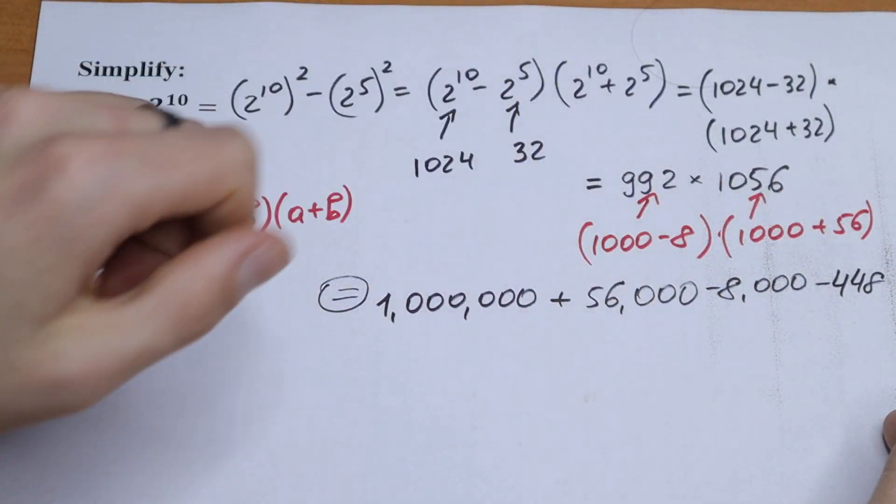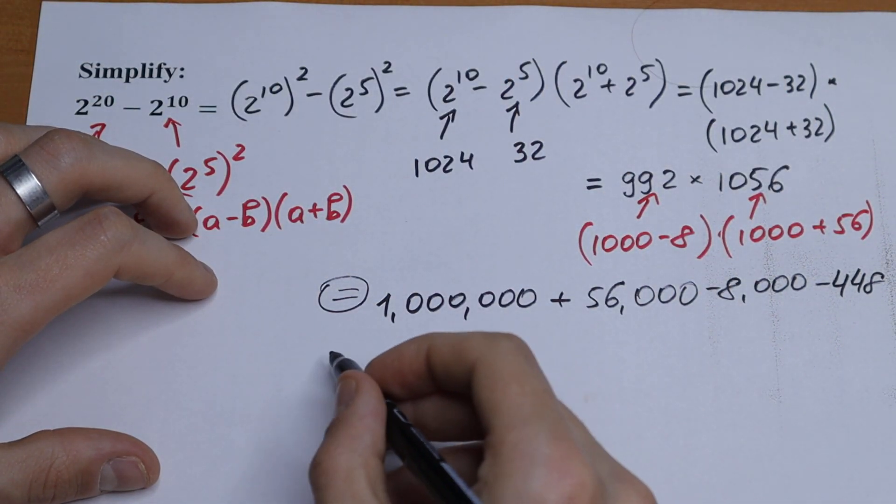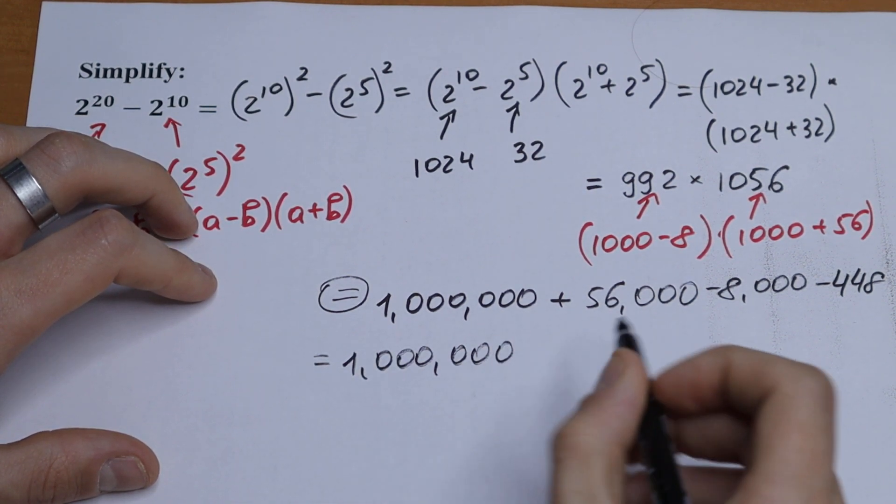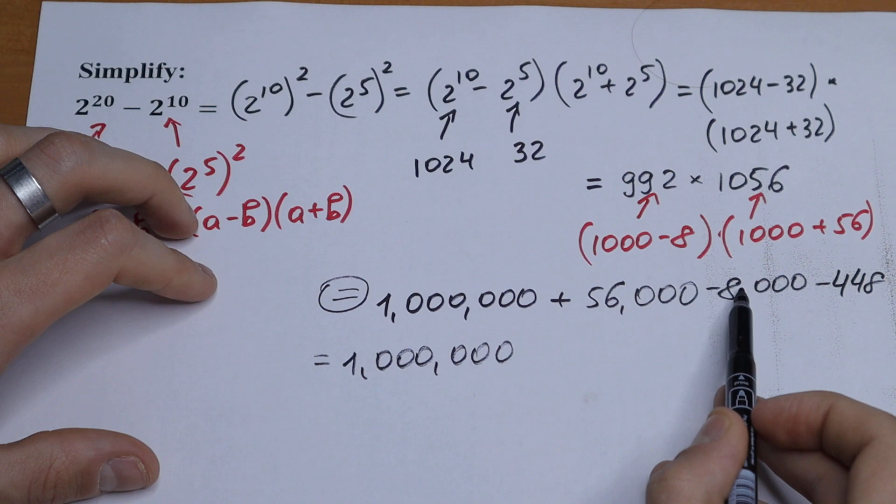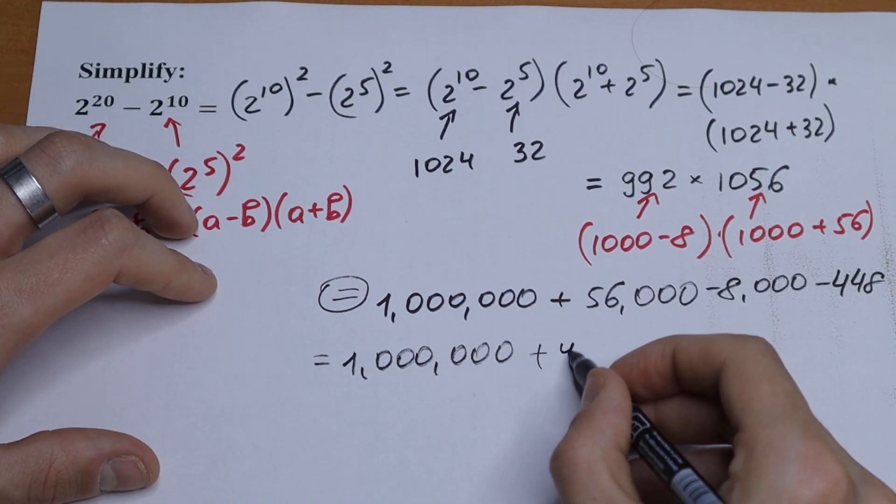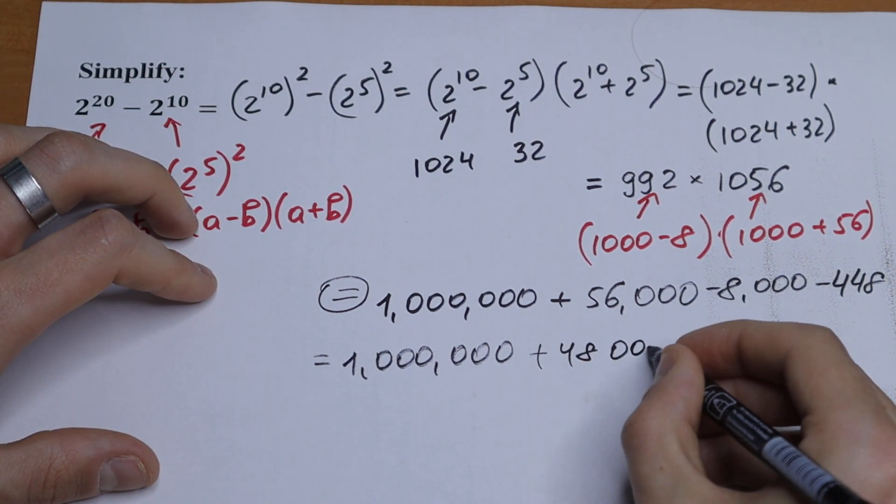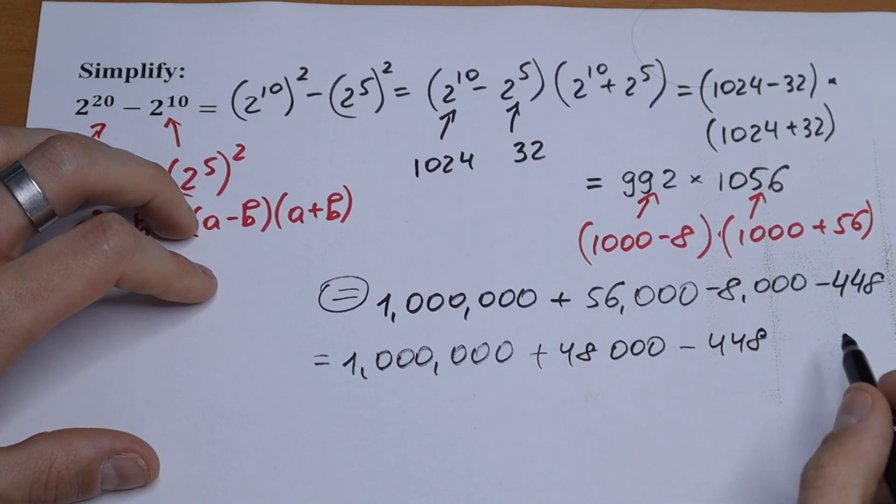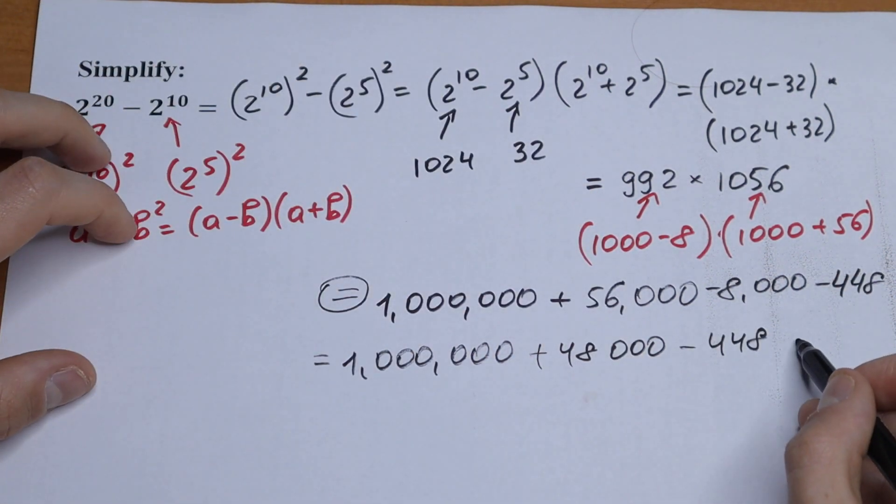So we need to simplify this expression. As a result, we will have 1 million. Right here we have 56 thousand minus 8 thousand, which will be plus 48 thousand. And in the end, minus 448.